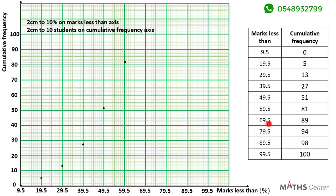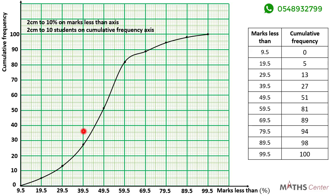The next point is (79.5, 94), then (89.5, 98), and the last one is (99.5, 100). After plotting all the points, you join them with your free hand to get the cumulative frequency curve.